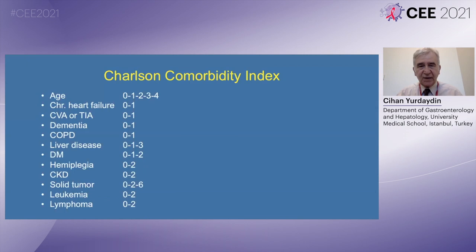What is the CCI, or the Charlson Comorbidity Index? It basically shows the important contribution of comorbidities such as chronic heart disease, liver disease, neurological disease, and other conditions to the outcome of COVID-19 disease.